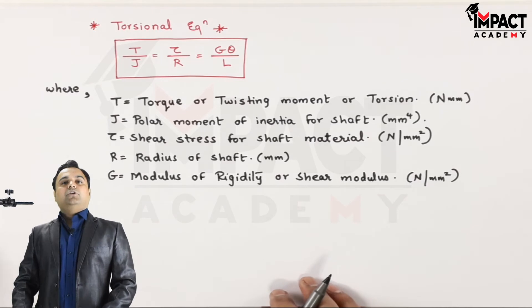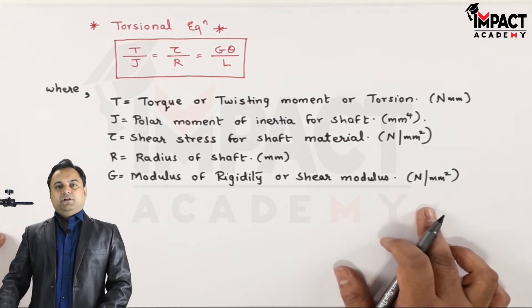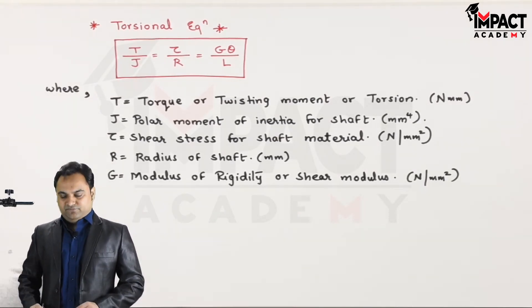G is the modulus of rigidity, also called as the shear modulus, having unit newton per millimeter square. This will also depend upon the material of the shaft.